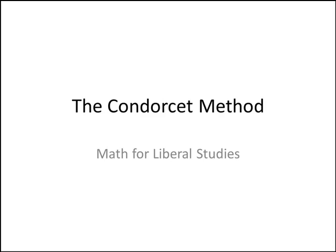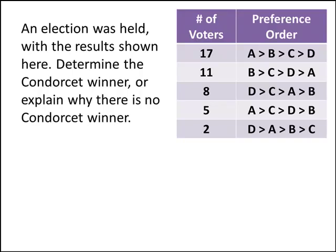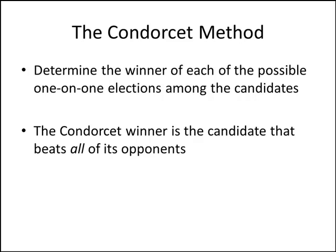In this video, we'll learn to use the Condorcet method to find the winner of an election. Here's a typical problem: an election was held with the results shown here — determine the Condorcet winner, or explain why there is no Condorcet winner. The Condorcet method works by determining the winner of each possible one-on-one election among the candidates, and the Condorcet winner is the candidate that beats all of its opponents.